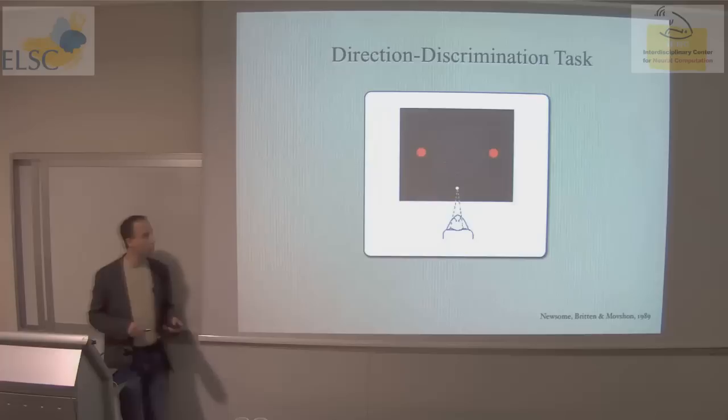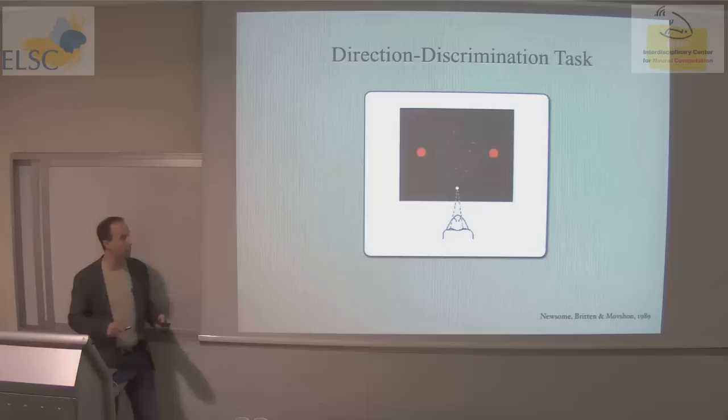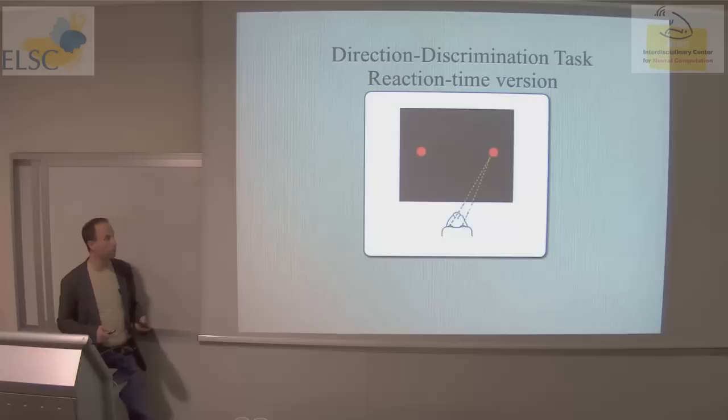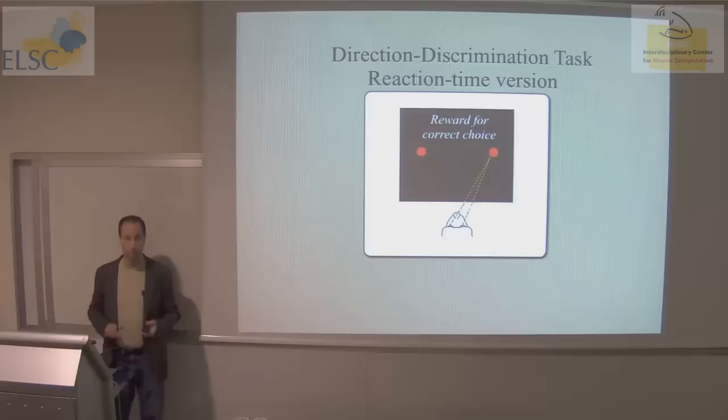In these experiments, the animal controls the viewing duration by breaking fixation whenever he's ready and making an eye movement. That allows us to measure both his choice — in this case he chooses right — and his reaction time: the amount of time that elapses from onset of the motion to the beginning of the monkey's eye movement response.